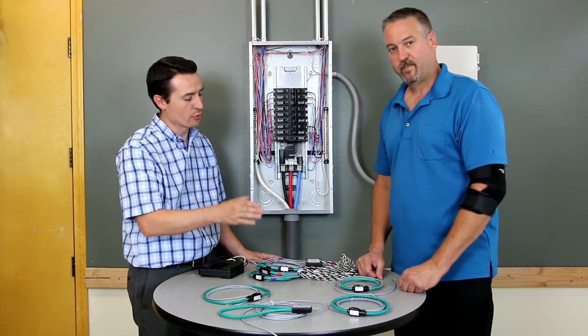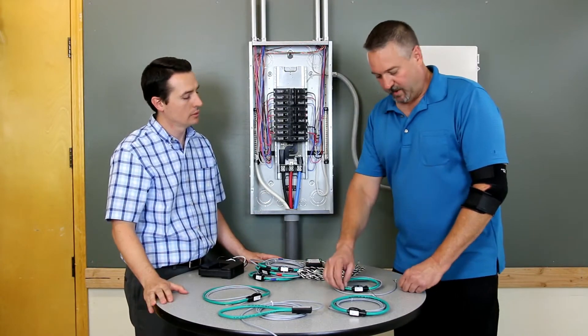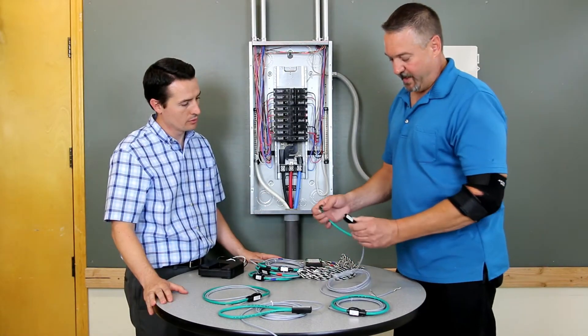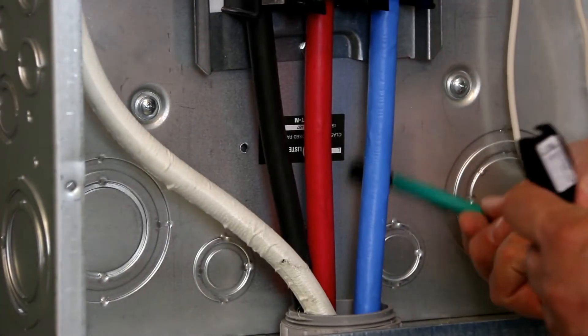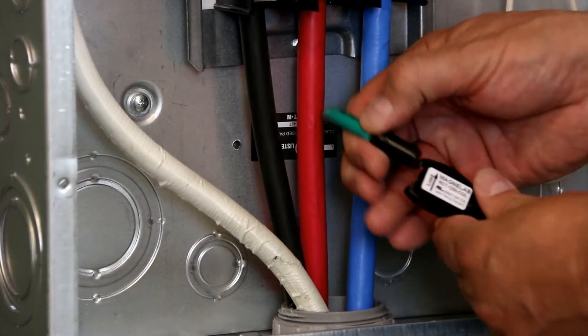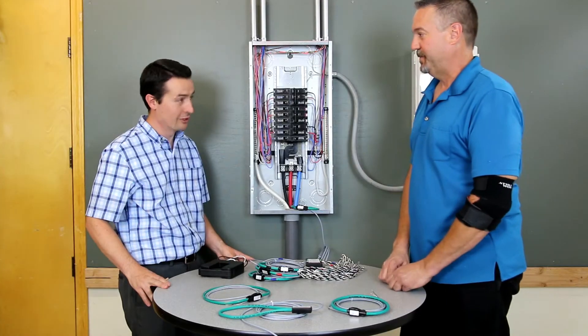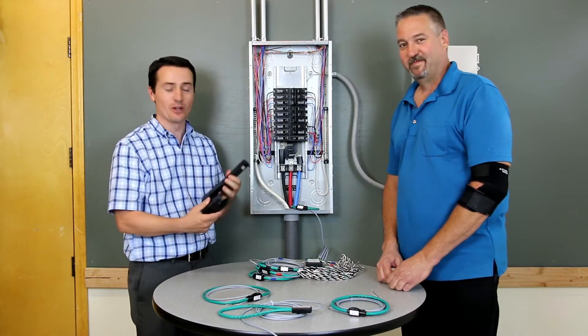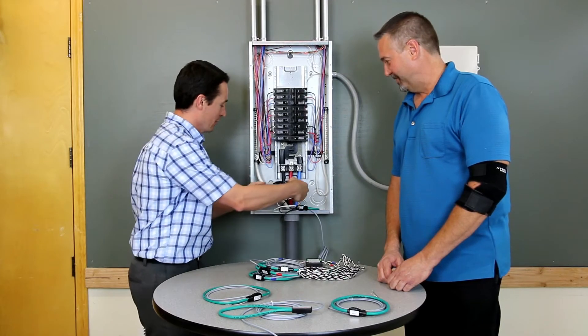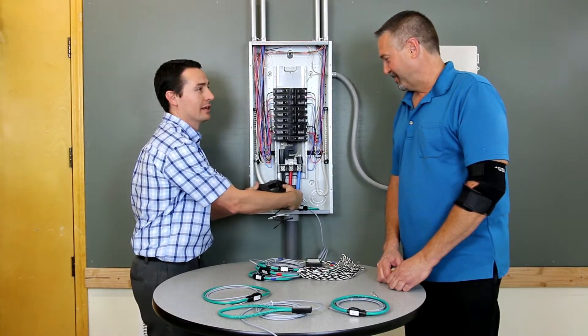And how do you install this Rogowski coil? The coil is simply installed by opening it here at the connector, placing it around the conductor to be under test, and snapping it closed. It's that simple. That looks a lot simpler than installing a traditional current transformer in a tiny power panel like this. Correct.